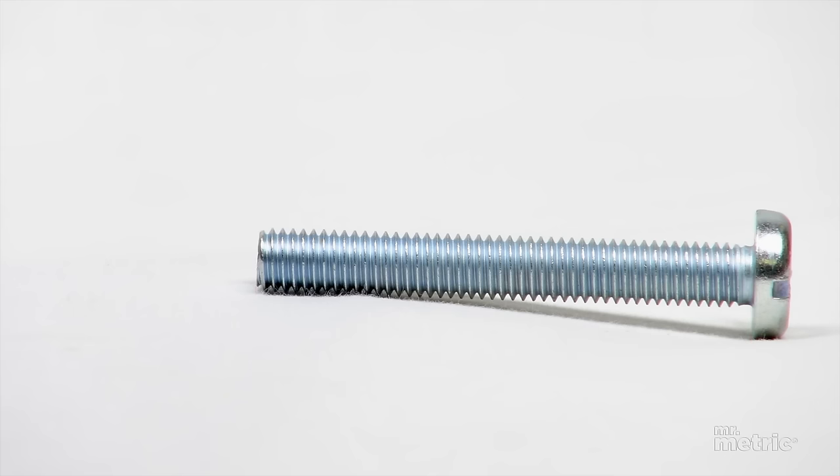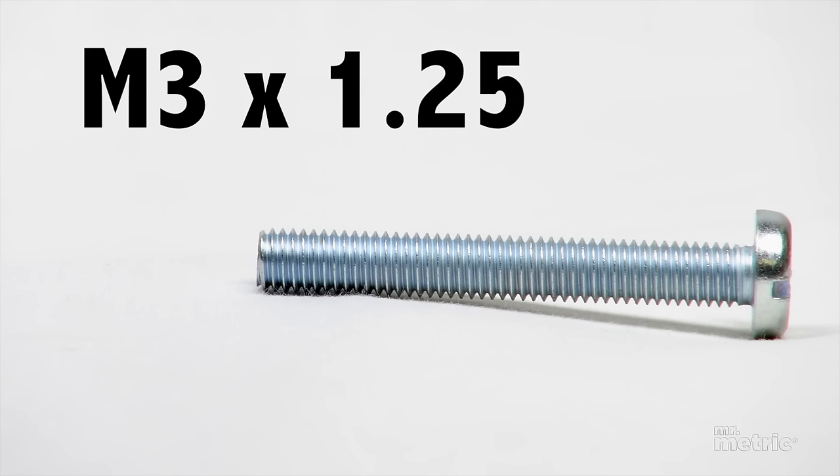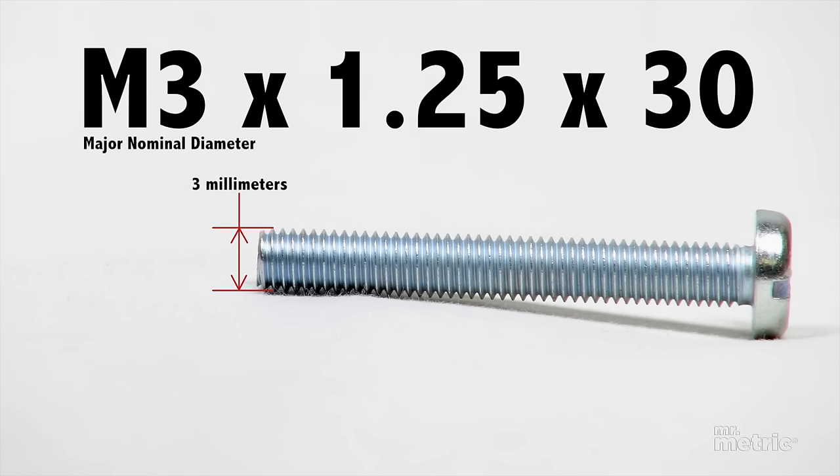A call-out for a metric fastener would be displayed as M3 by 1.25 by 30. For this example, the bolt would be 3 millimeters in diameter, have a pitch of 1.25 millimeters, and be 30 millimeters in length.